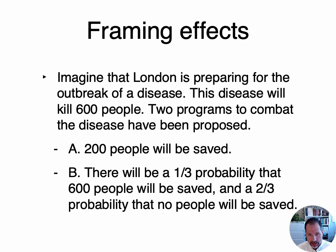Let's look at framing effects in more detail. This is a classic example from Kahneman and Tversky's research — I've only changed the city name. What Kahneman and Tversky did was come up with an interesting way to present the same information in two different semantic contexts, two different semantic frames, and it changes the way people make choices.